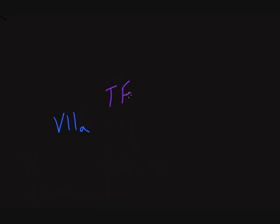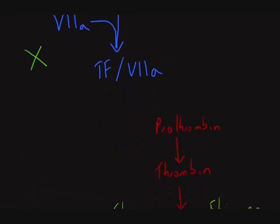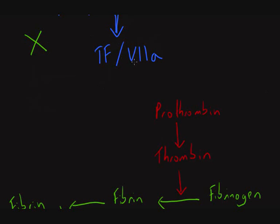The extrinsic pathway starts with the production of something called tissue factor, also known as thromboplastin. This combines with activated factor 7, which exists in small amounts in the blood. Individually they have very little action of their own, but they combine as cofactors to produce a tissue factor–activated factor 7 complex. This complex now has enzyme action, as an active component of the cascade, and importantly it has enzyme action on factor 10.